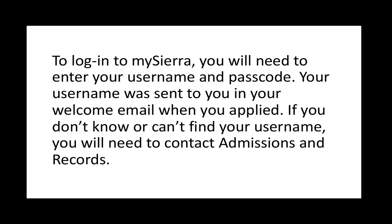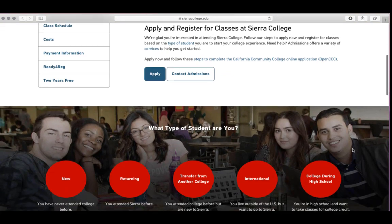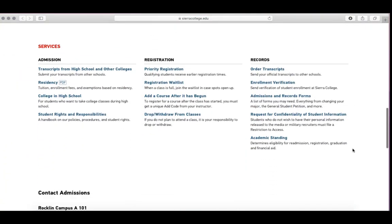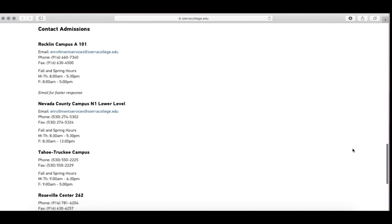To log in to My Sierra you will need to enter your username and password. Your username was sent to you in your welcome email when you applied. If you don't know or can't find your username, you will need to contact Admissions and Records. You can find the contact information for Admissions on the Sierra College website for each campus.